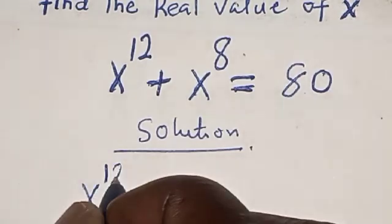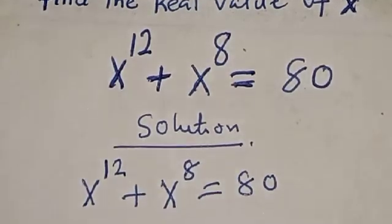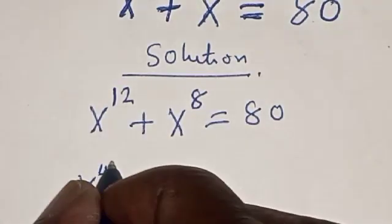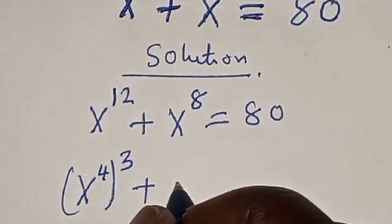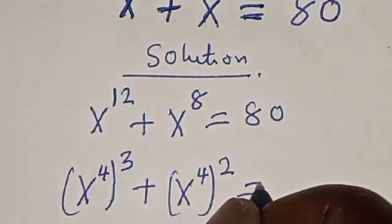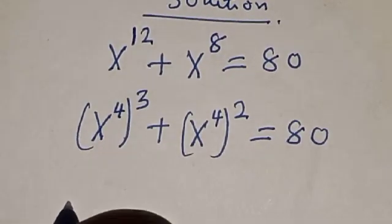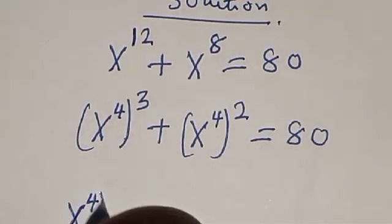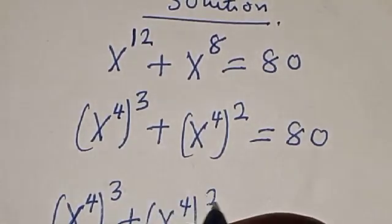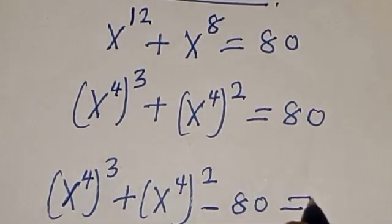We have the given equation s raised to power 12 plus s raised to power 8 is equal to 80. This is the same thing as s raised to power 4, raised to power 3, plus s raised to power 4 squared is equal to 80. Now we have s raised to power 4 cubed plus s raised to power 4 squared minus 80 is equal to zero.